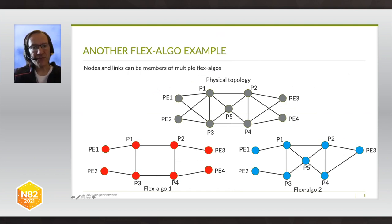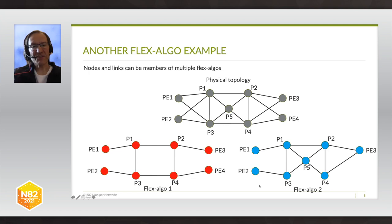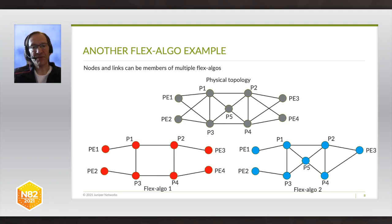Here's another example. The physical topology is shown in gray on the top half of the slide. Looking at the red Flex-algo on the bottom right, only a subset of nodes and links are members of it. For example, P5 is not a member of the red Flex-algo, while it is a member of the blue Flex-algo. On the other hand, P1, P2, P3, and P4 are members of both Flex-algos. Some links are members of both Flex-algos and some are members of only one. With Flex-algo, you can have a subset of nodes and links being members according to your particular needs.